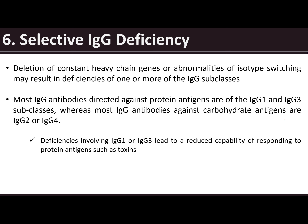As a developmental disorder, absence of IgM with normal IgG and IgA would contradict the theory of sequential immunoglobulin development. Then we also have selective IgG deficiency, caused by the deletion of constant heavy chain genes or abnormalities in isotype switching, resulting in the deficiency of one or more of the IgG subclasses.